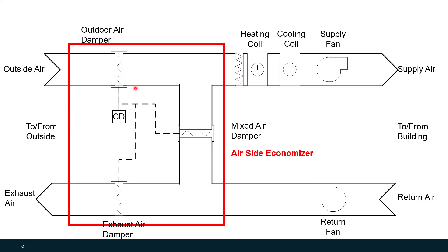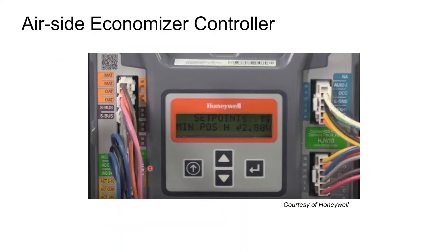These dampers can work in tandem to provide outside air for free cooling when we need it. They are wired together, as shown by these dashed lines, to work together to provide that free cooling. This is an air side economizer controller. All the dampers would be wired in here along with temperature sensors for the outside air temperature (OAT) and mixed air temperature. Sometimes we'll also use humidity sensors, and we'll get more into that in a few minutes.